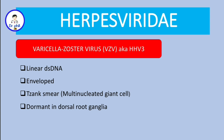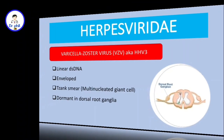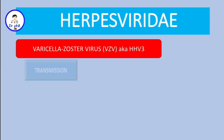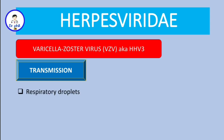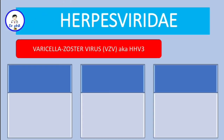This virus lies dormant in the dorsal root ganglia. VZV is transmitted through respiratory droplets, through vesicular fluid from rupturing vesicles, and also transplacentally — meaning it can cross the placenta, making it one of the TORCH infections.